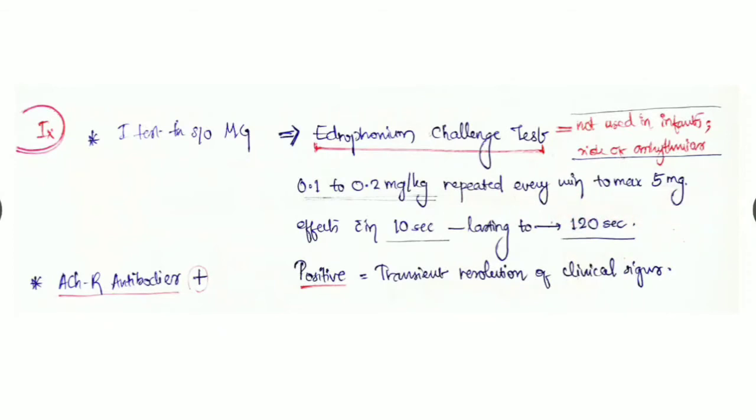We give 0.1 to 0.2 mg per kg of edrophonium repeated every minute to a maximum of 5 mg. Effects occur within 10 seconds and may last 120 seconds. There is transient resolution of clinical signs - the patient regains strength of skeletal and voluntary muscles for a few minutes. This is a positive result confirming myasthenia gravis.